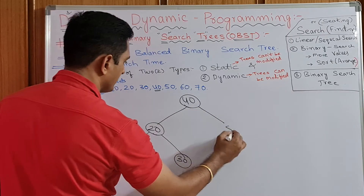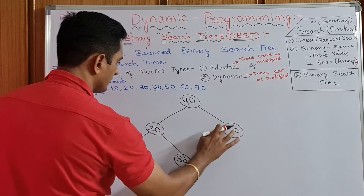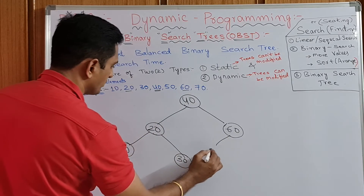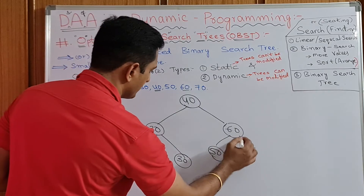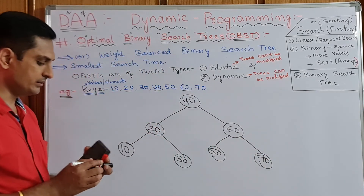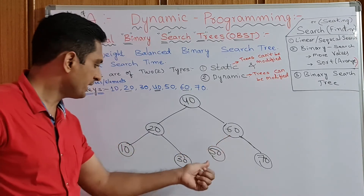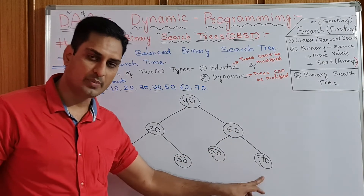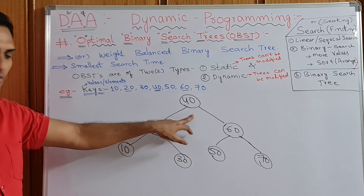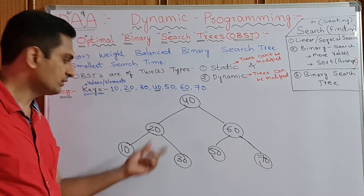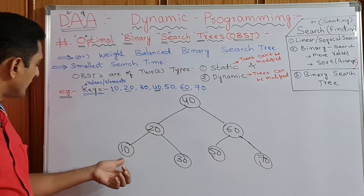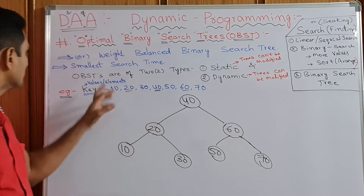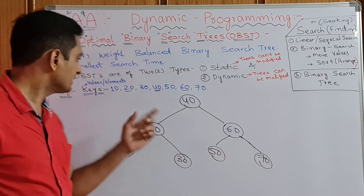Similarly, the right side should be bigger. The left side of a node should be less than that node's value, and the right side should be greater. When 60 is a root node, the left side should be less than 60, and 70 on the right side should be greater than 60. When 40 is the root node, 20, 10, and 30 are lesser than 40. When 20 is root node, left side values should be less and right side values should be more. That's the condition for drawing a balanced, weight-balanced tree.